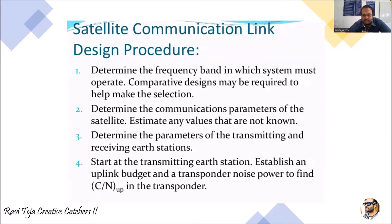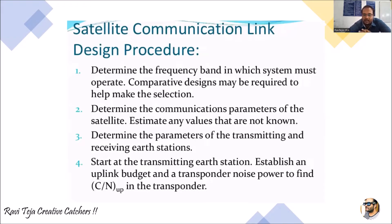The fourth step is to start at the transmitting earth station and establish an uplink budget. Whenever you are sending a signal from an earth station to the satellite, this is the uplink. We need to find the carrier-to-noise ratio, C/N, in the transponder. The transponder receives the data and retransmits it to the desired location, so the C/N ratio in the transponder must be determined for the uplink budget.